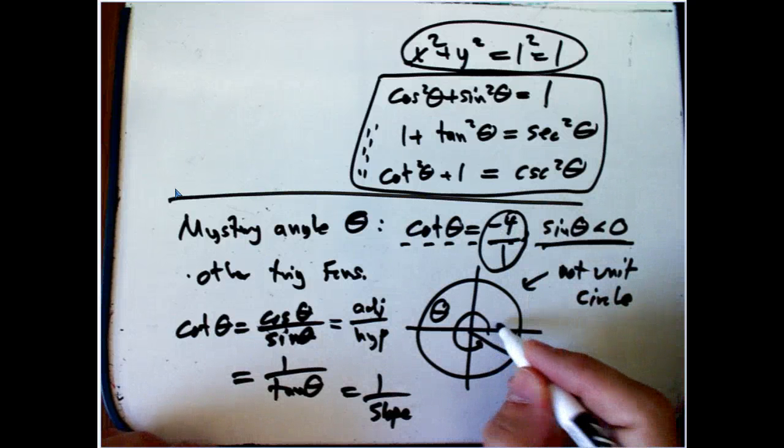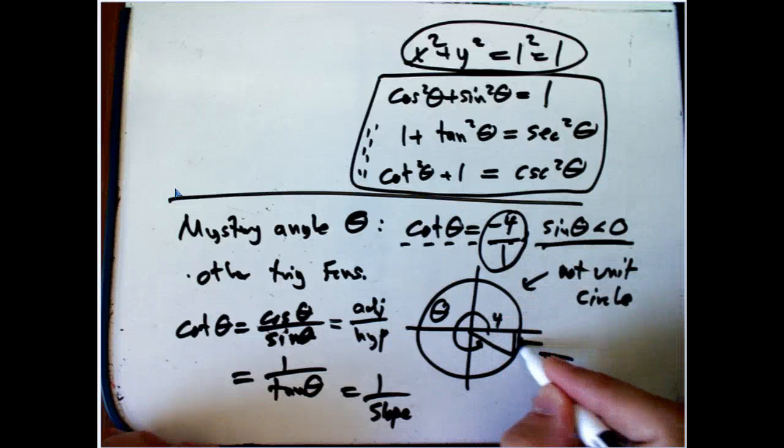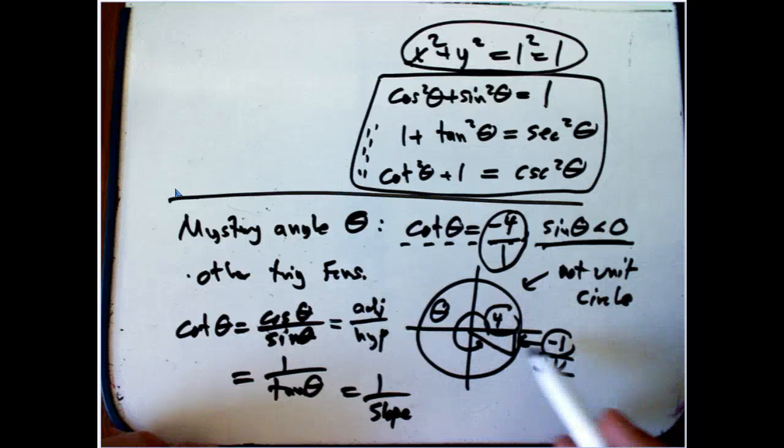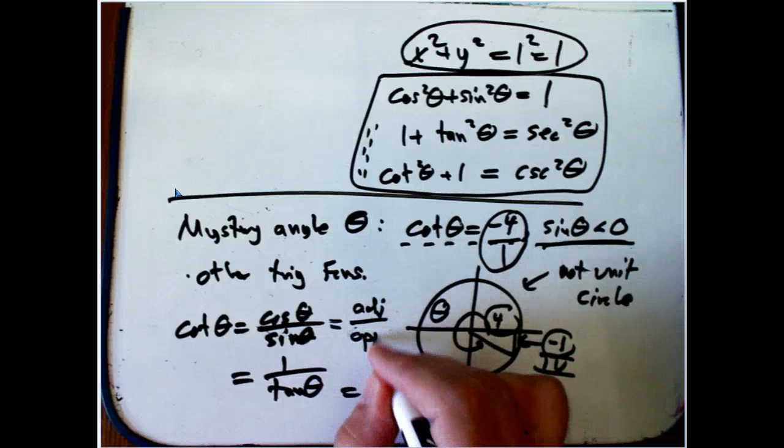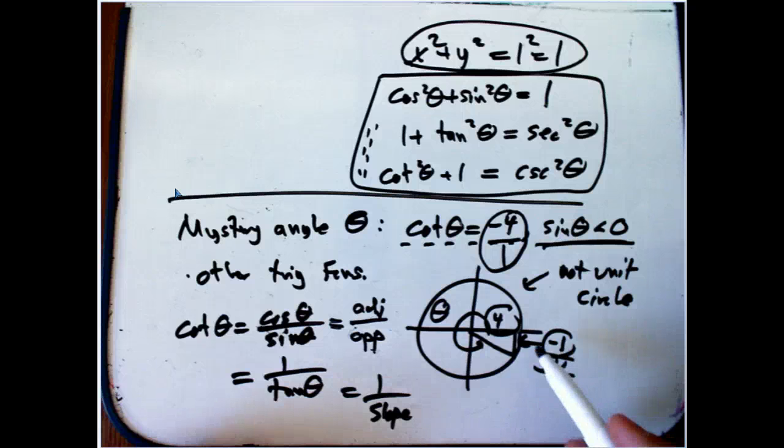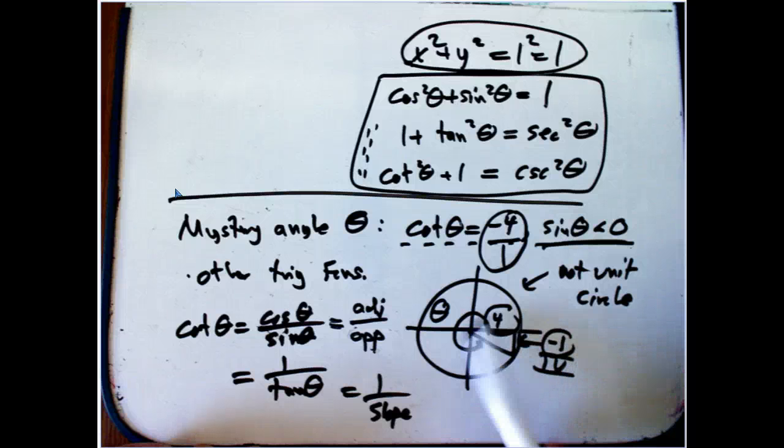So the adjacent is going to be 4 and the opposite is going to be minus 1. So adjacent over opposite becomes minus 4. And I'm in the right quadrant.